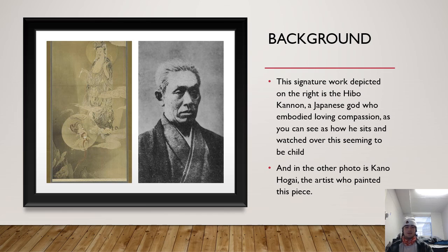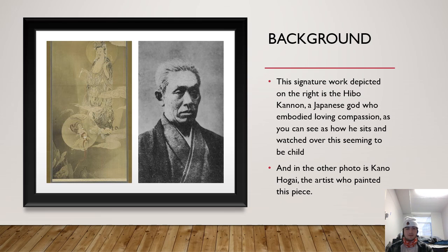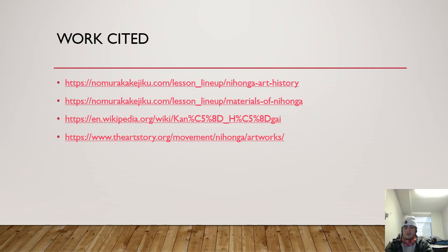The man on the right is the person who painted this painting — his name is Kano Hogai. He is one of the most famous Japanese Nihonga painters, and this painting on the left is one of his most profound and famous works. Thank you all for watching and for being such a great audience. I hope you have a wonderful day and an even better break.